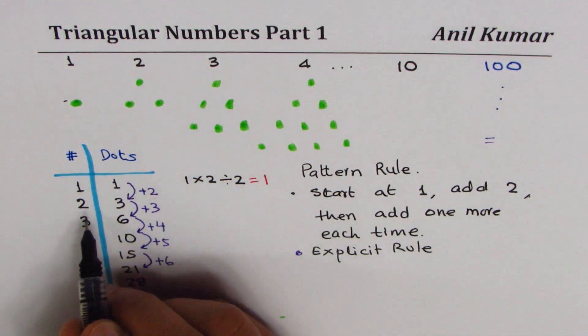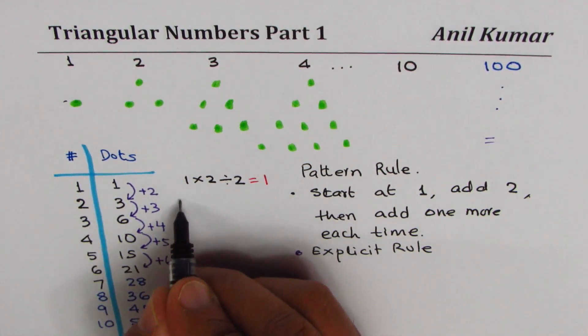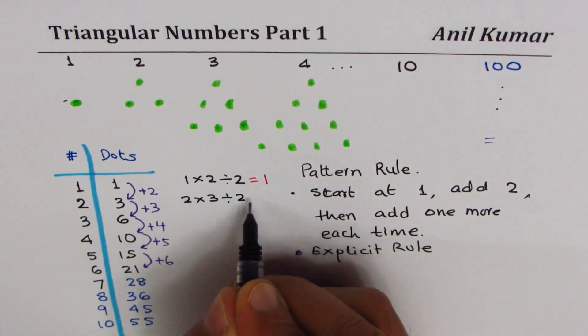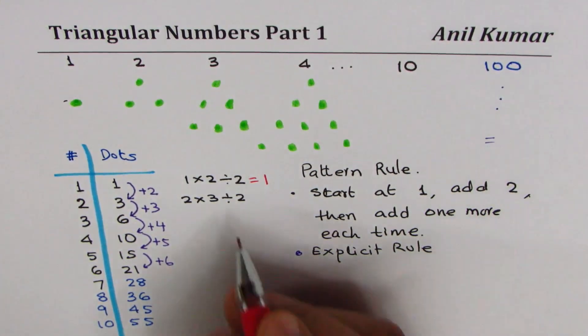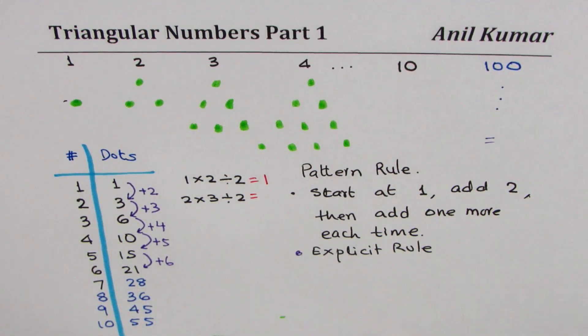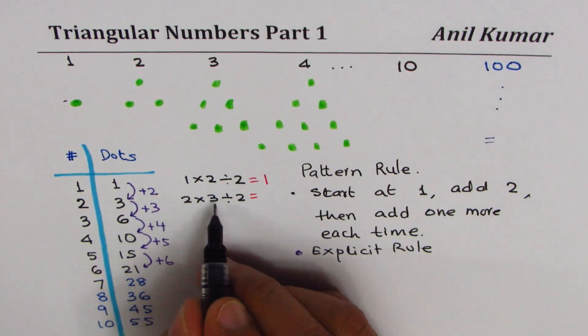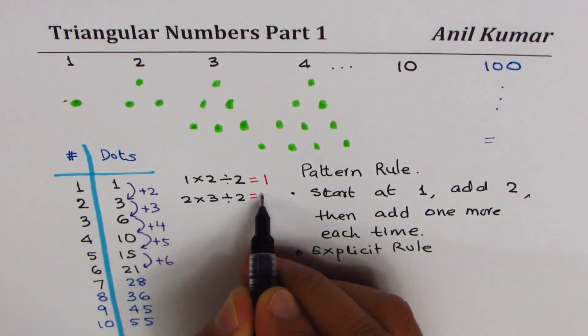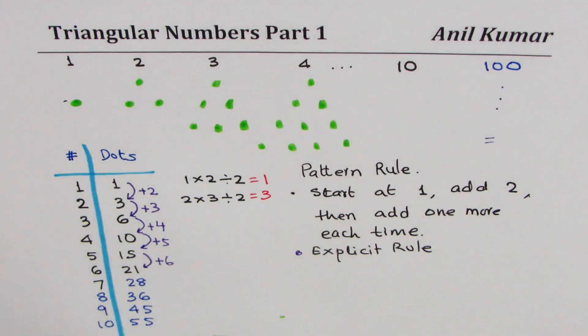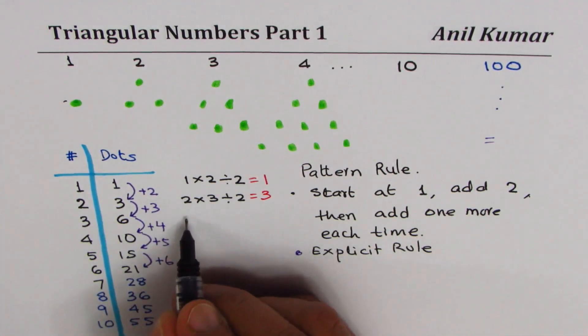Let's follow this method. Now for the second one, so I'll do two times three and then divide by two. What do I get? Two divided by two is one and three times one is three. Or you can say two times three is six, six divided by two is three. So that gives you the number three and if I continue with this pattern,